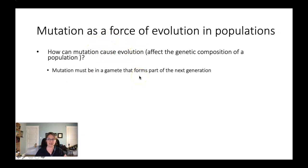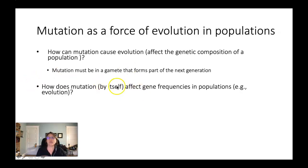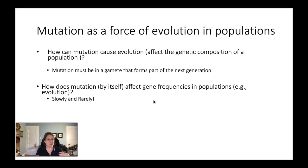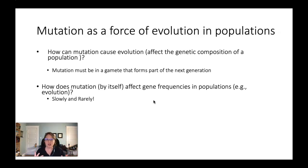Any mutations that occur in cells of the body that are not producing egg or sperm cells are somatic mutations only, and they don't contribute to evolution. Mutation does not actually affect gene frequencies very much — very slowly and very rarely. It turns out that for every 10,000 gametes produced, approximately one will have a mutation at any particular gene in the human genome.